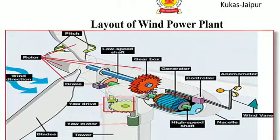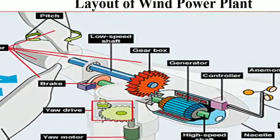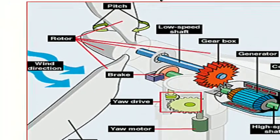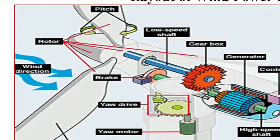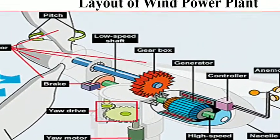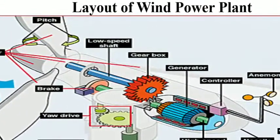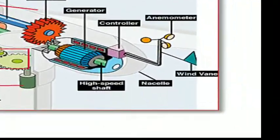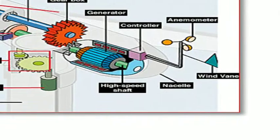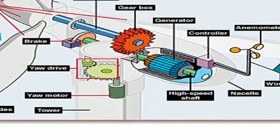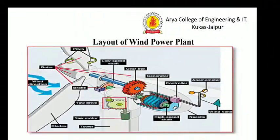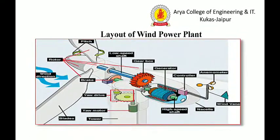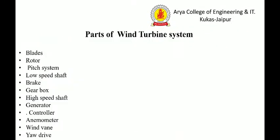This is the general layout of the wind power plant. In it we can see the parts inserted in the wind power plant: there is a rotor, a low speed shaft, gearbox, generator for converting energy, controller, anemometer, high speed shaft, yaw motor, and tower. These are the parts of the wind turbine.